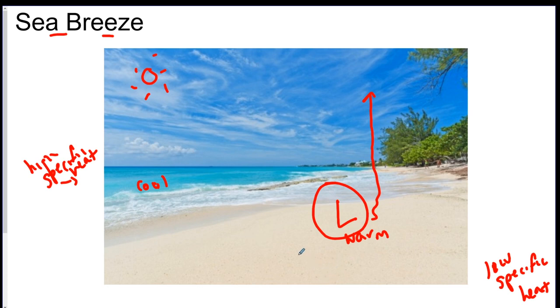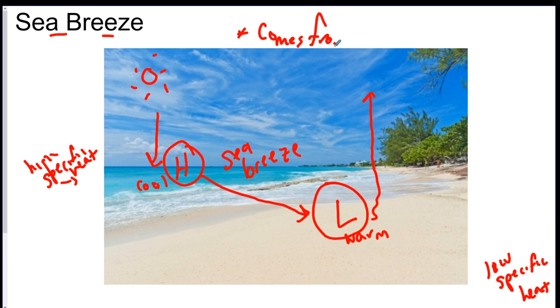Now the opposite is going to be happening over the water because it's cooler. So the air is going to be sinking here, and it's cool, so you're going to get a high pressure over here. And what's going to happen is the air from the high pressure is going to move to the low pressure. This creates a wind, and this is called a sea breeze. And the reason it's called a sea breeze is because it comes from the sea. Wind is named from where it comes from.